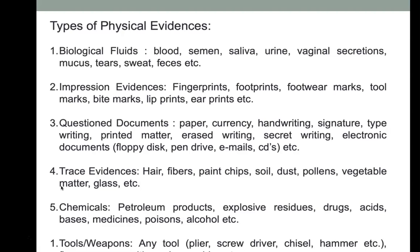The common types of physical evidence encountered at crime scenes include, first, biological fluids — blood, semen, saliva, urine, vaginal secretion, mucus, tears, sweat, or feces. These may be found on clothes, the victim's body, or the criminal's body, and are most commonly found in murder or sexual assault cases. Second, impression evidences — fingerprints, footprints, footwear marks, and tool marks — mostly found in theft and burglary cases, and sometimes murder.